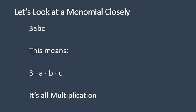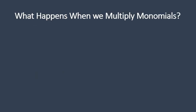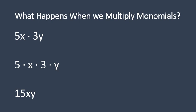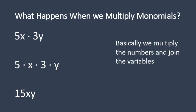In this lesson today, what we're going to do is multiply monomials times monomials. I'm going to expand it out to show you in basic terms what we're doing. 5x times 3y — remember, 5x means 5 times x, and 3y means 3 times y, so it's 5 times x times 3 times y. We can multiply the numbers: 5 times 3 gives us 15, and x times y gives us xy. So multiplying monomials is basically multiplying the numbers and joining the variables. Pretty straightforward.